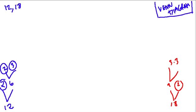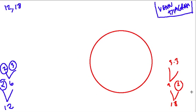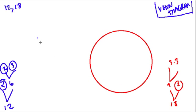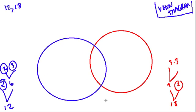So again, we have 12 and 18. So for 12, we use a blue circle. For 12, we use a blue circle. And for 18, we use a red circle. And these two circles should be relatively the same size.